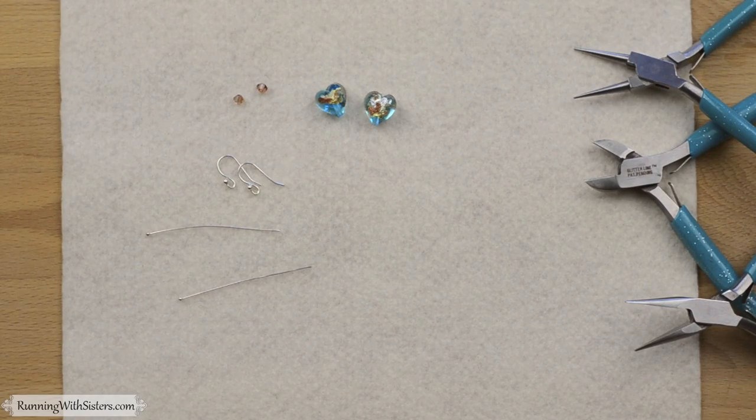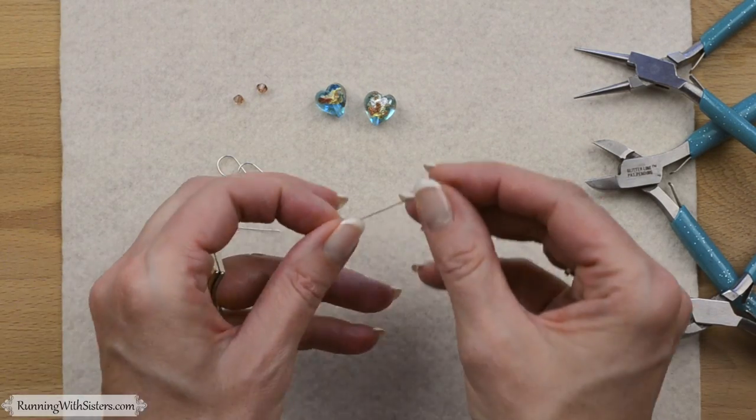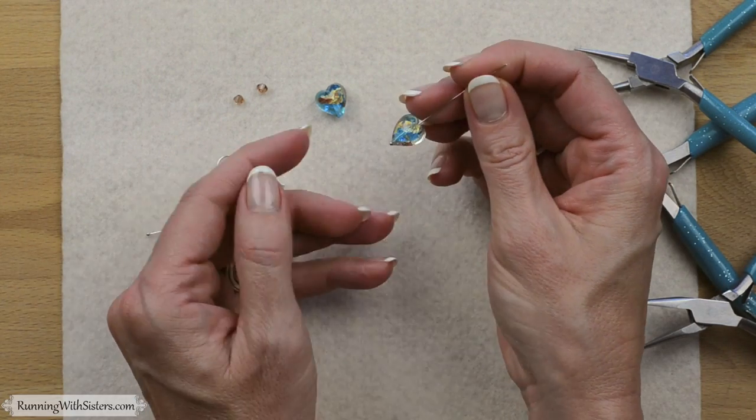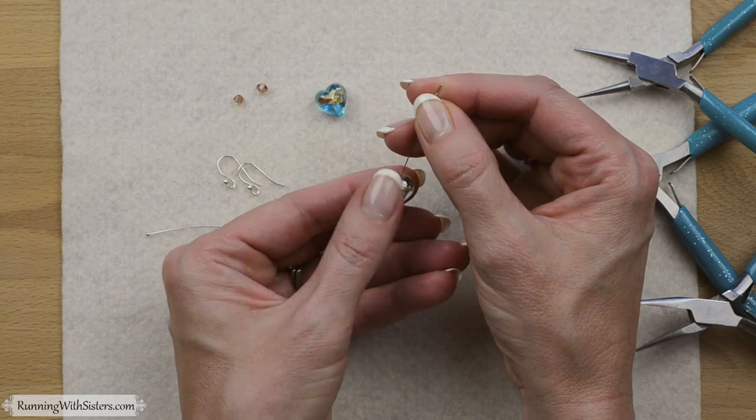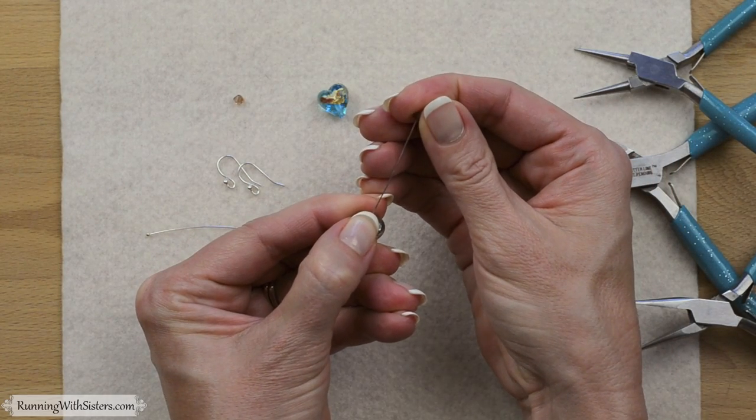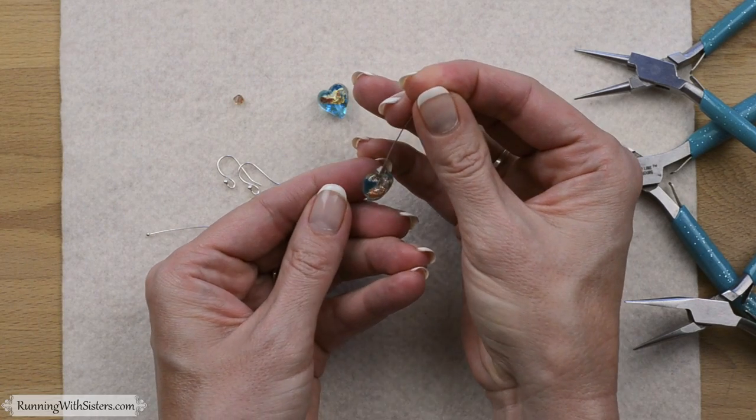To make our first earring, we're going to slide the glass bead onto a head pin. We want to make sure that the heart sits upright, so I'm going bottom first. Then we need a bicone. I'm going to slide it on, and it's going to nestle right into the curvy parts of the heart.